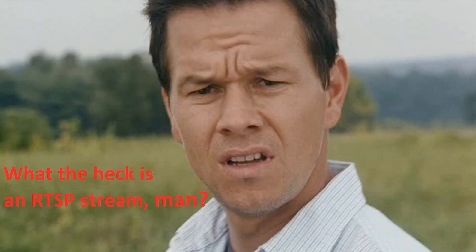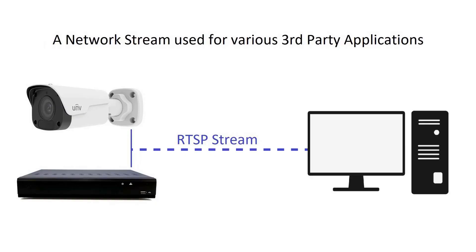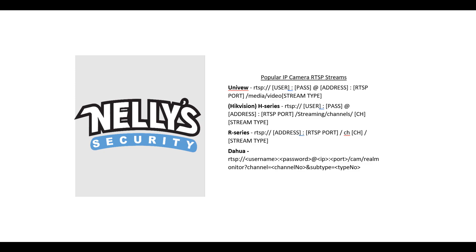Now some of you may be wondering what exactly is an RTSP stream. I'm not going to go into depth on that, but I'll give you a brief explanation. Basically, almost all IP cameras, NVRs, and DVRs have an RTSP stream that you can access by typing in a specific URL. Each manufacturer has their own unique URL address. You can probably find yours by Googling it. However, here are just a few popular ones listed here.